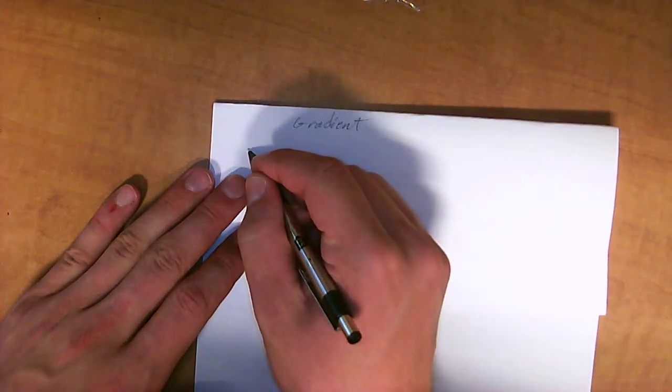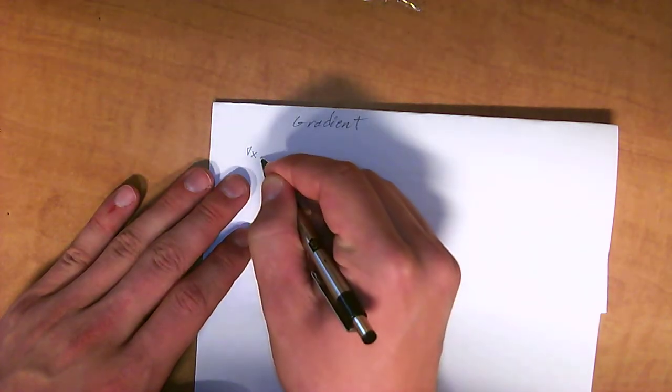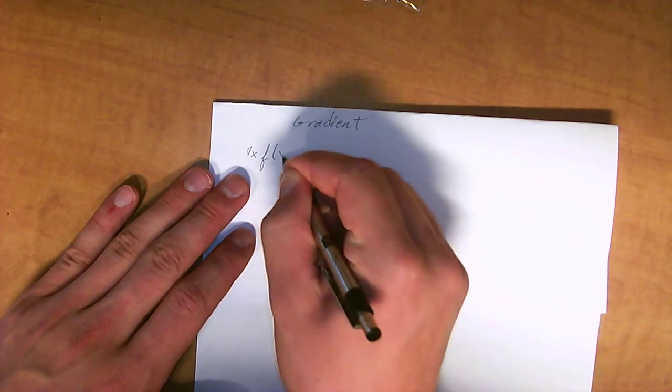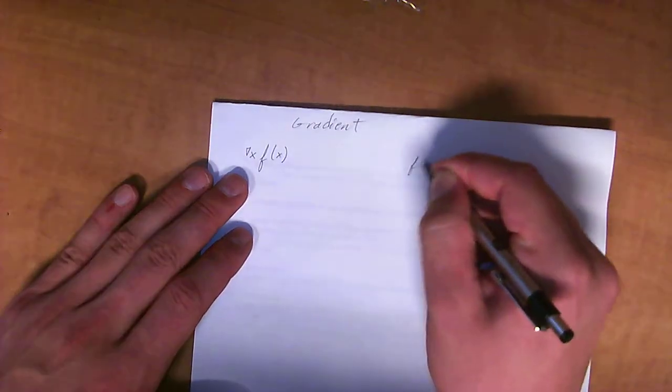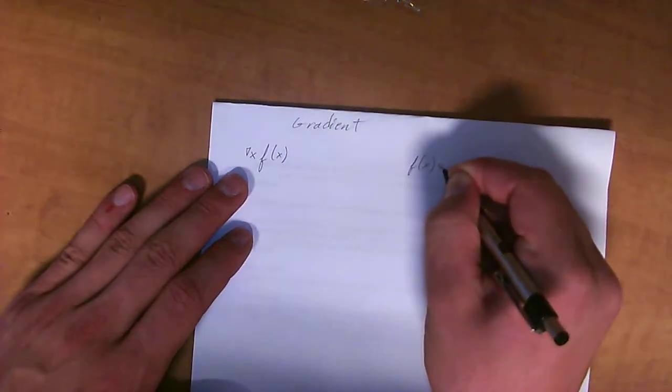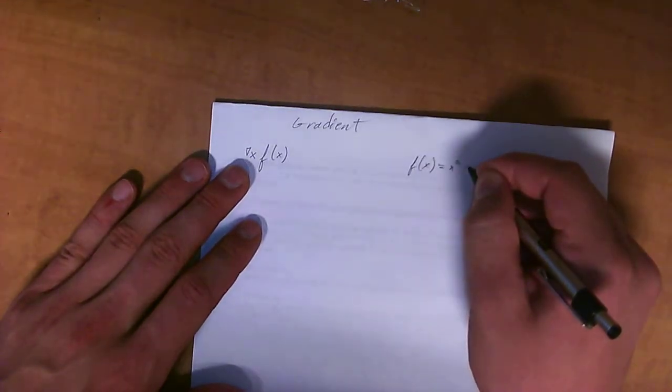So if I want to take the gradient of a function f with respect to x, if I find that f(x) is equal to x₁ squared plus 2x₂,